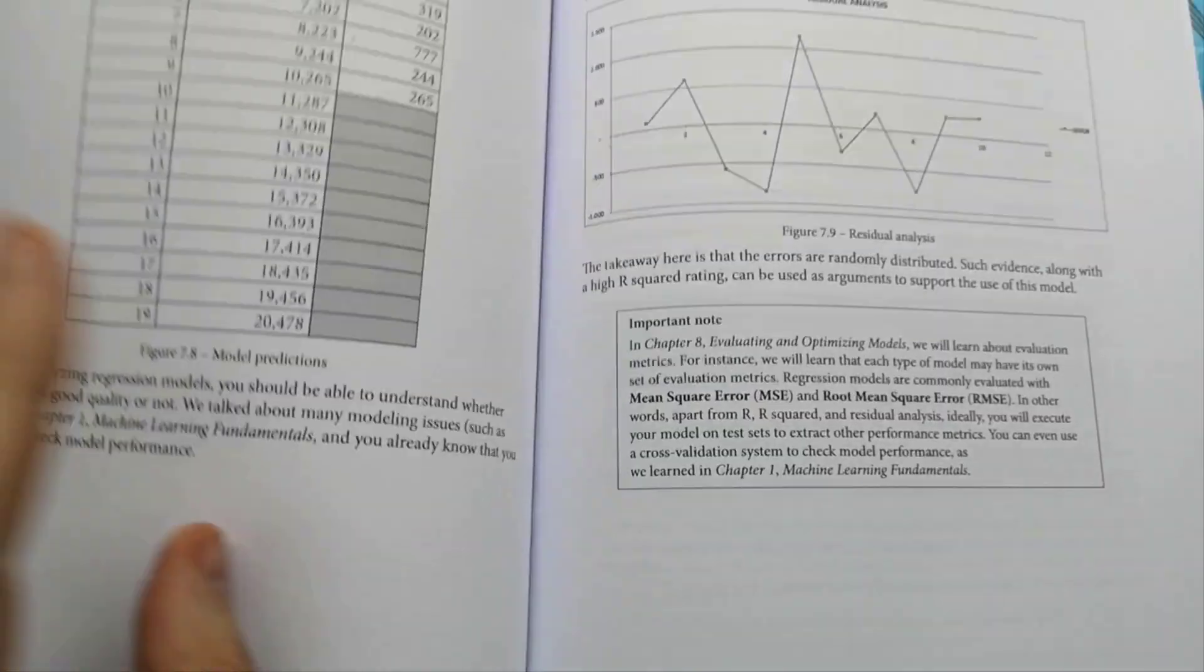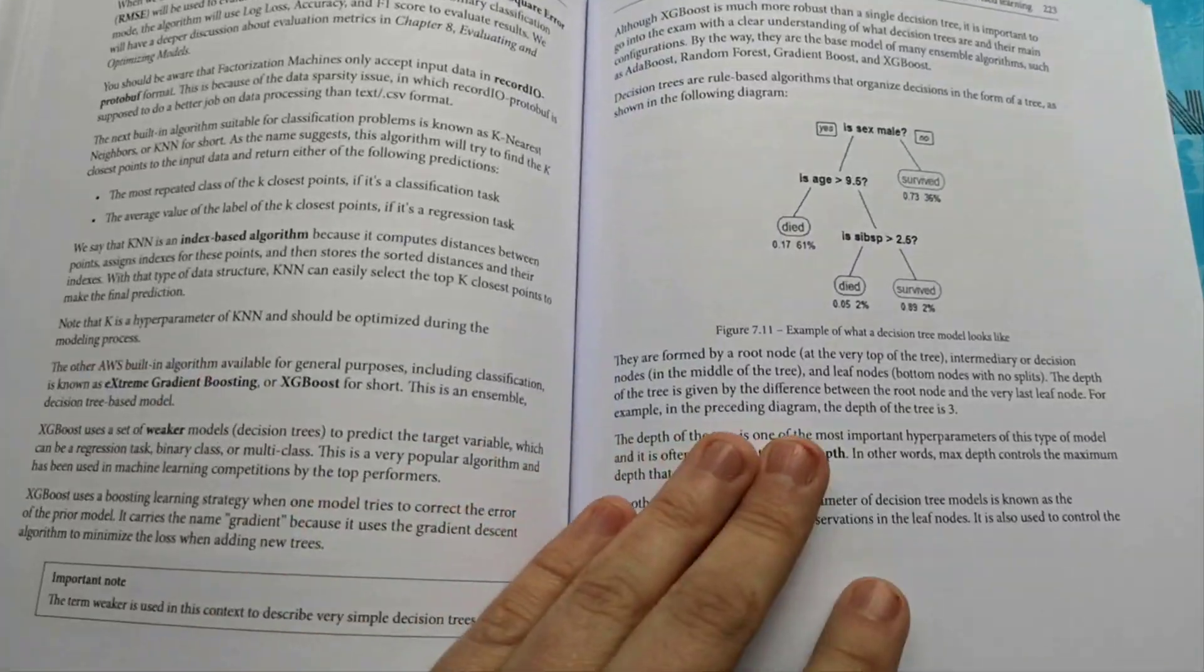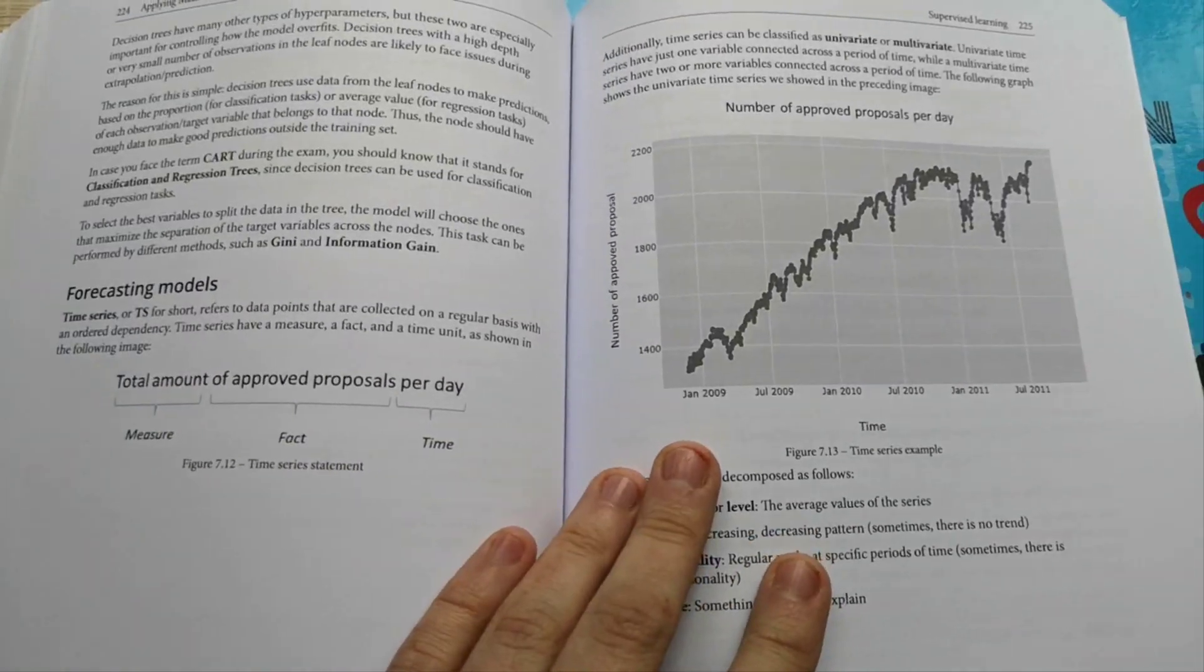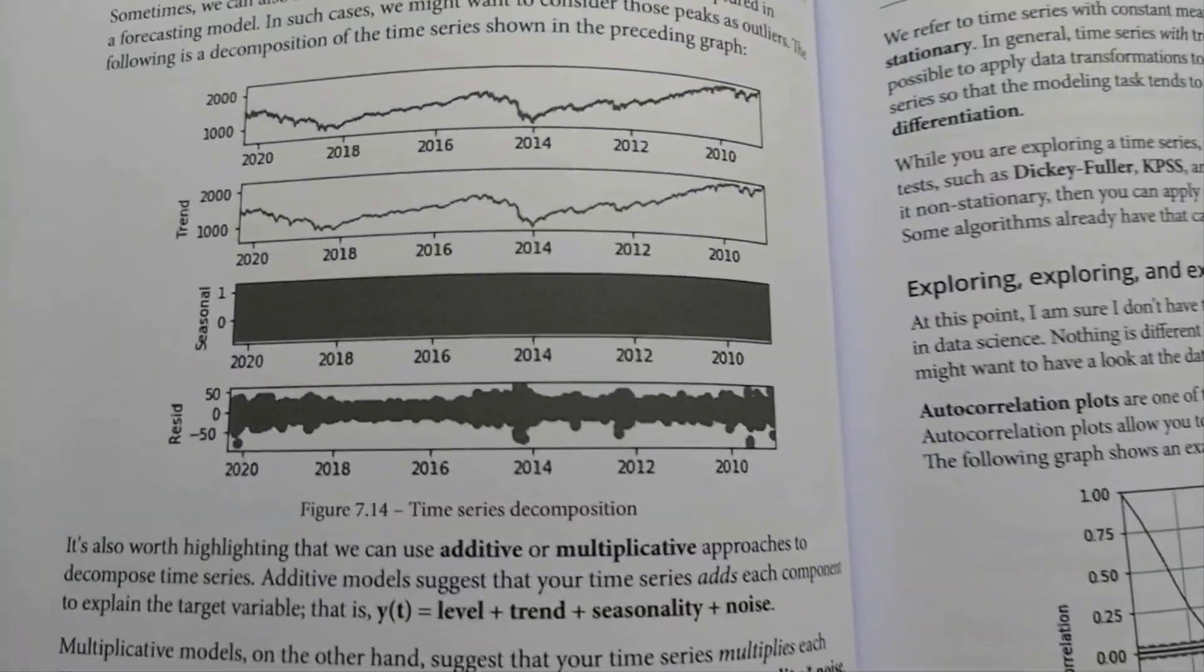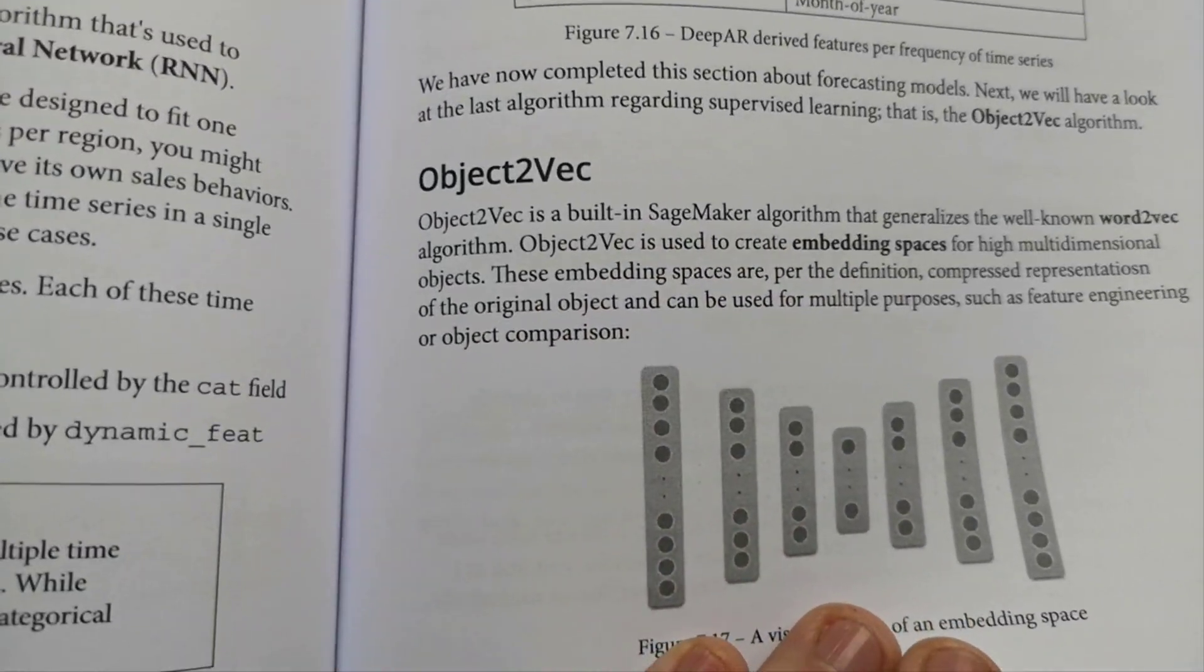Having a good sense of different types of algorithms and machine learning approaches will put you in a very good position to make decisions during your project and answering tricky questions during your actual machine learning specialty exam. And here is what you will get a good sense about in terms of AWS can bring benefit.